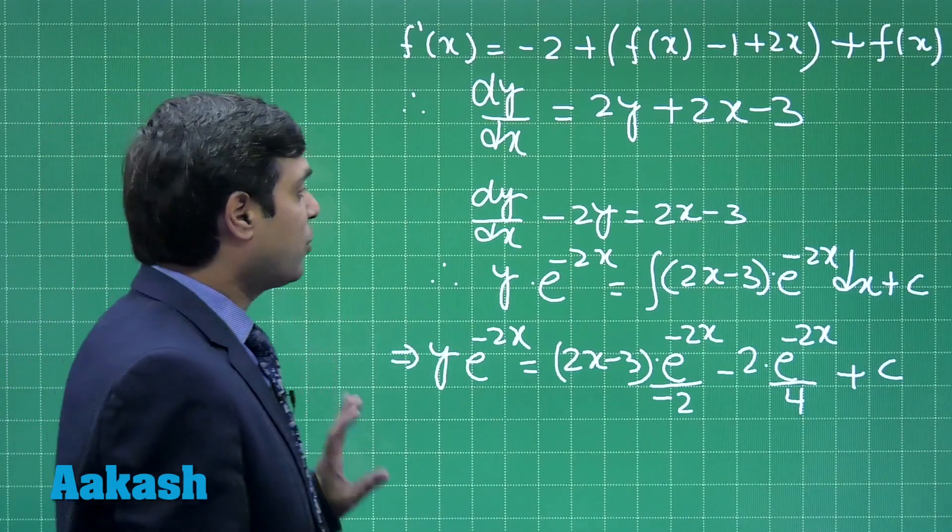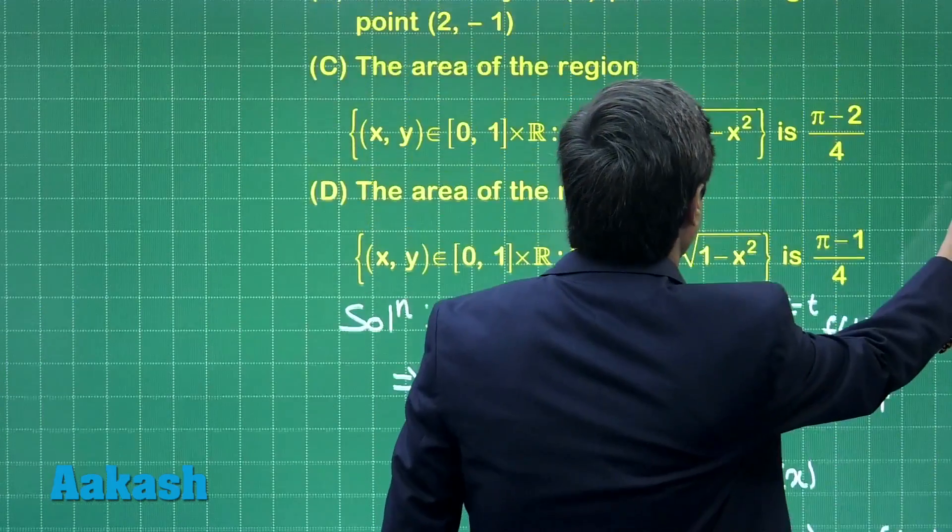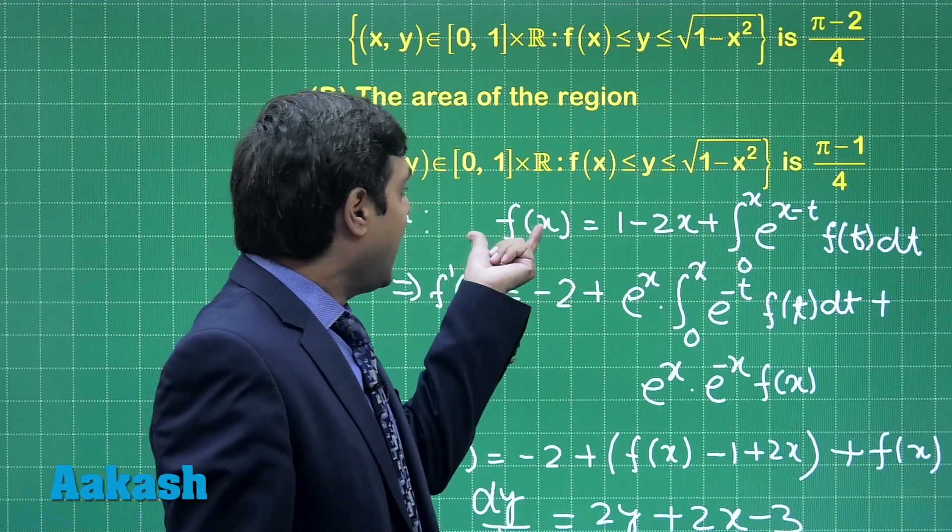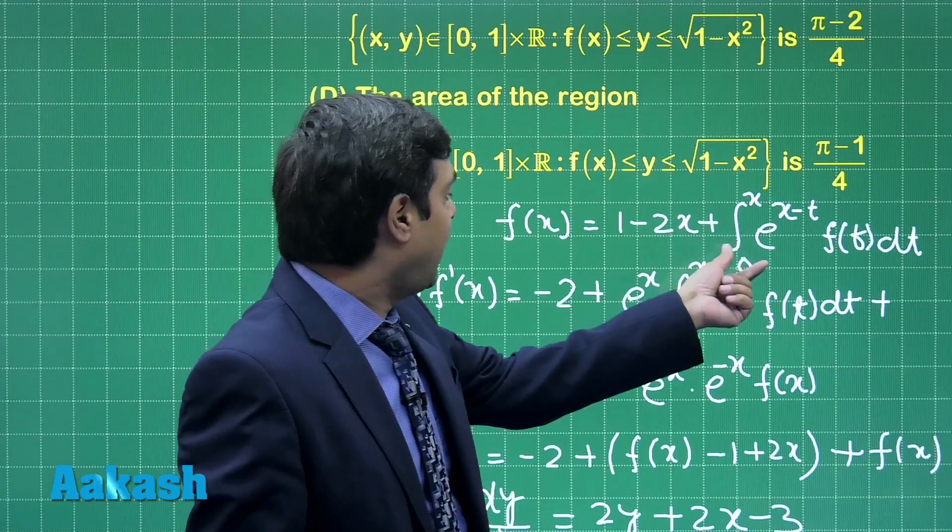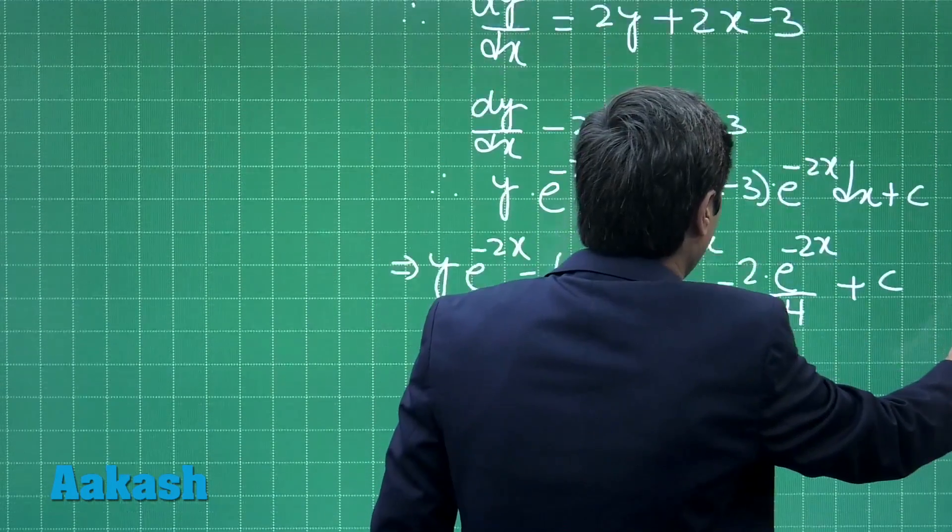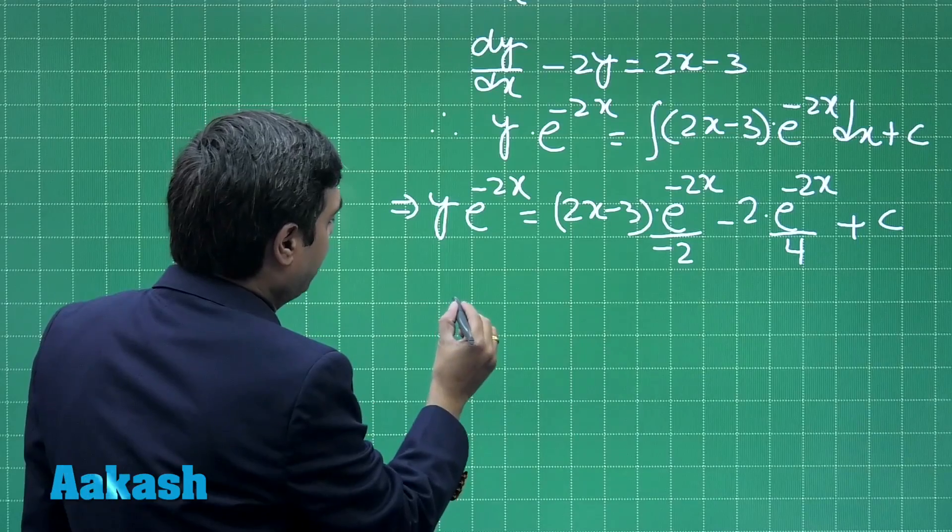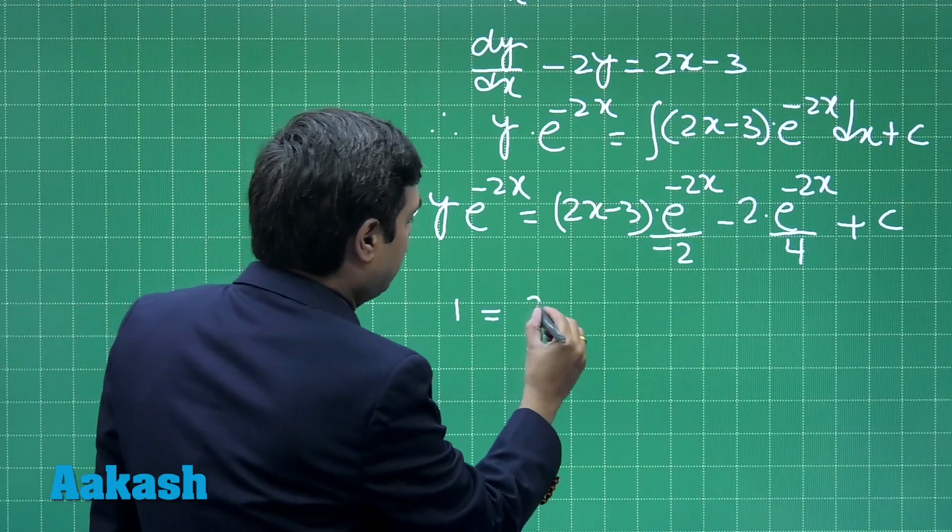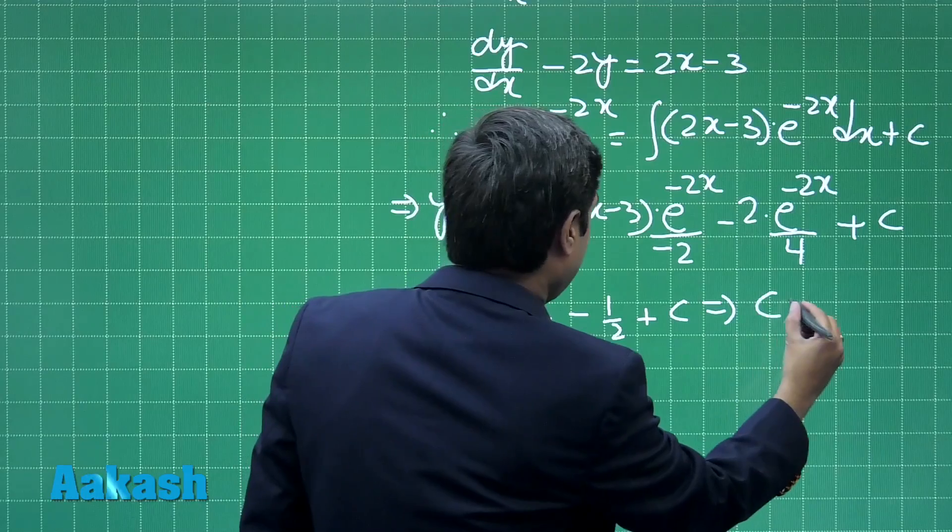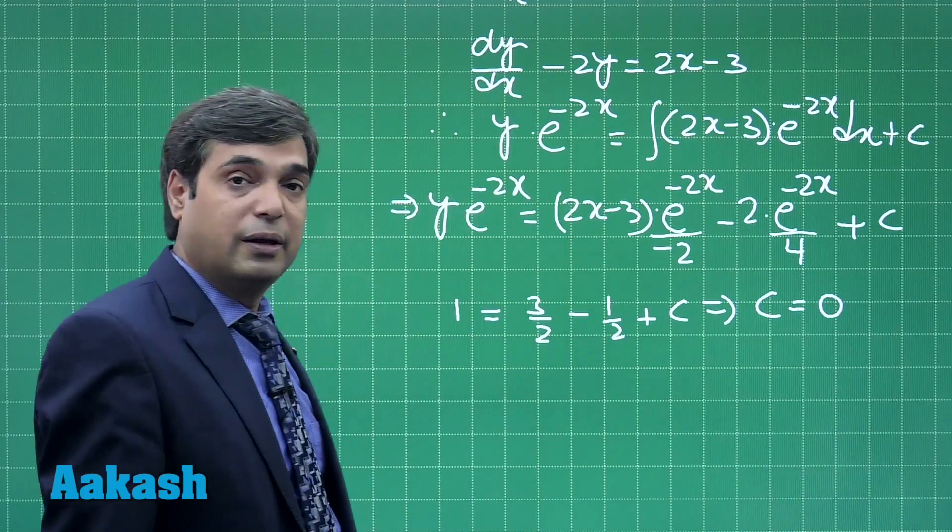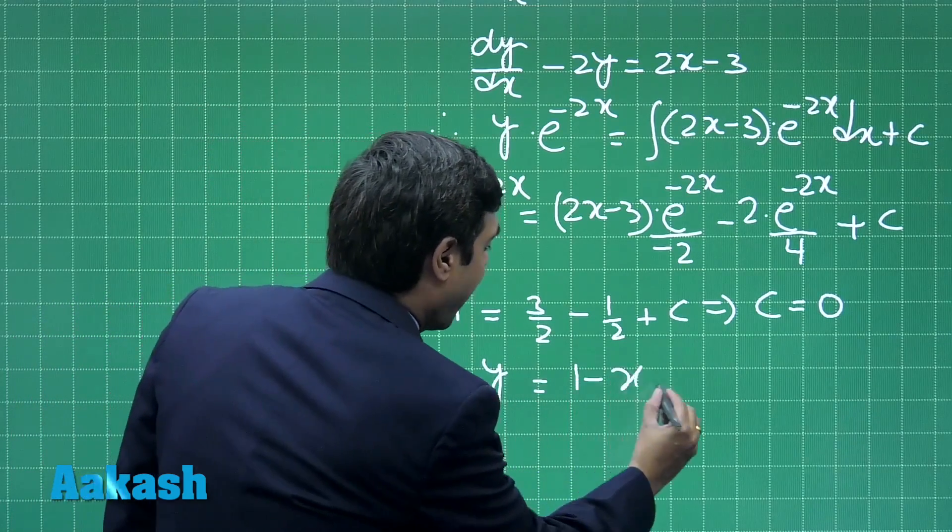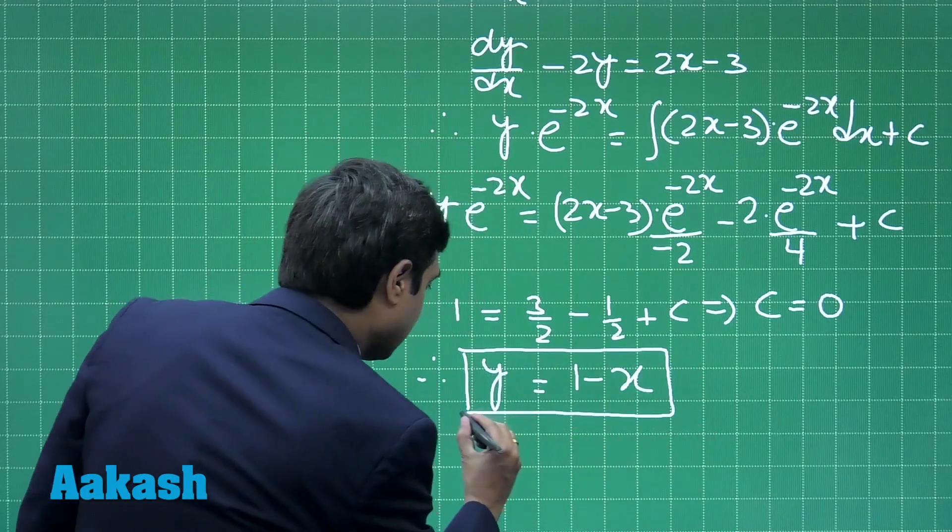Now if we look at the given equation here and we put x equals 0, what we obtain: f(0) is equal to 1 plus 0, that is f(0) is 1. We have here the value for f(0) as 1. Now substituting x equals 0, we get 1 is equal to 3/2 minus 1/2 plus c, that is c is equal to 0.